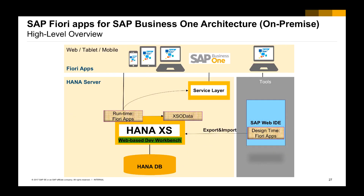We have already went through the architecture overview of SAP Business One for SAP on HANA. In the last unit, we learned how to create a Fiori app using HANA XO data. In this unit, we are going to learn how to create a Fiori app using the Service Layer, accessing the business logic in Business One.